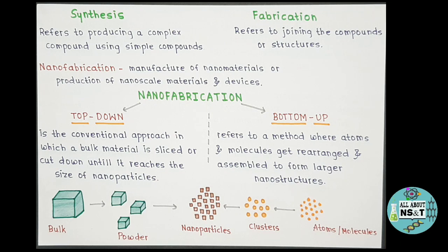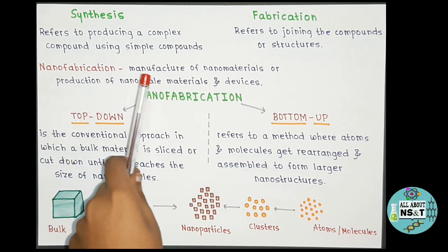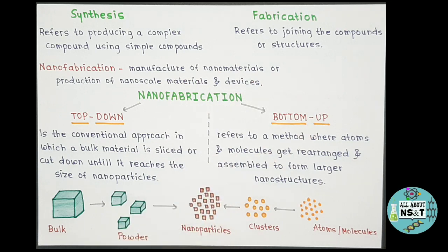Now let's understand nanofabrication — what it is and how it is implemented. Nanofabrication is the manufacture of materials with nanometer dimensions, or in other words, the manufacture of nanomaterials and nanoscale devices. This nanofabrication process involves different techniques by which we can manufacture different types of nanomaterials.